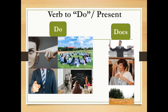Verb to do, present. The pronouns here are divided into two groups: one with 'do', including I, you, we, they; and the other with 'does', including he, she, it.